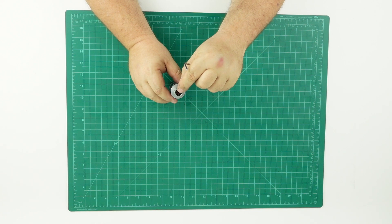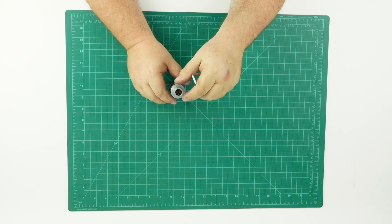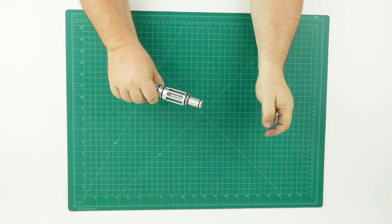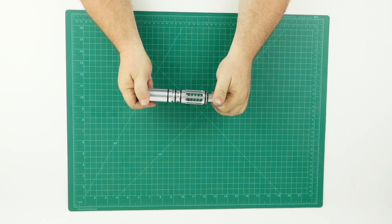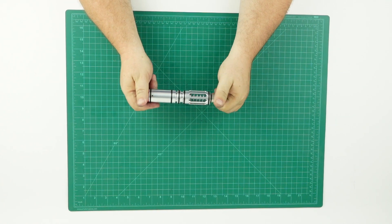Again, I would use a little bit of some type of Loctite on that screw. You want to be able to get it off, but you want to make sure that it's not moving if you're in the middle of the game.